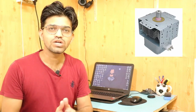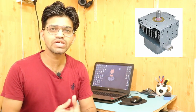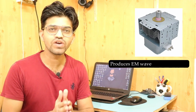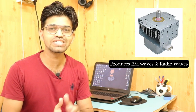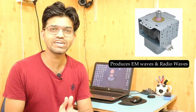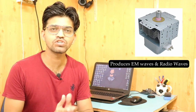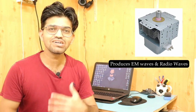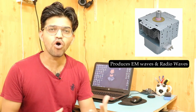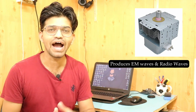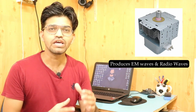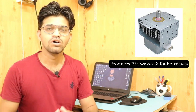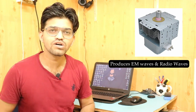The magnetron is the device which produces electromagnetic waves — specifically radio waves — which are used in radar technology and also in microwave ovens. The basic important principle behind the production of these EM waves relates to LC oscillations.